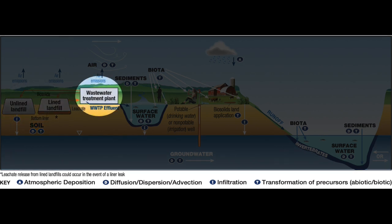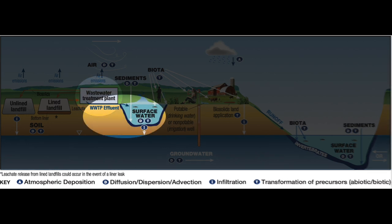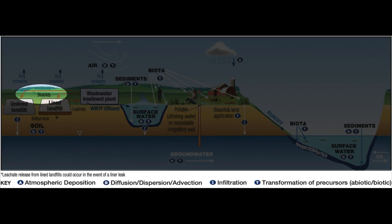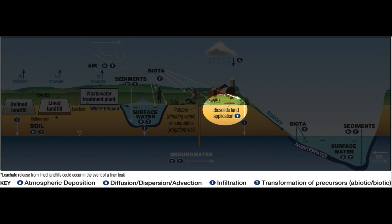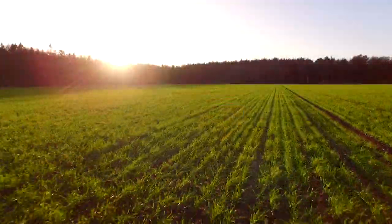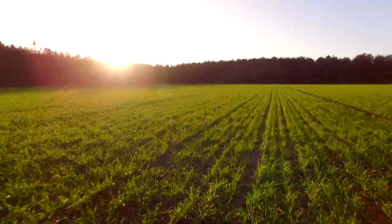Wastewater treatment plants typically do not eliminate PFAS from their waste stream. Oxidation of precursor compounds to terminal perfluoroalkyl acids, such as PFOA, can occur during wastewater treatment. PFAS may still be present in wastewater treatment plant effluent discharging to surface water and in biosolids produced by wastewater treatment. These biosolids can be applied to cropland, where PFAS in the biosolids can impact soil, leach to water, or be taken up by plants growing in that soil.